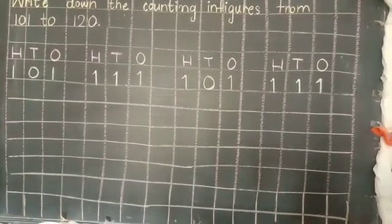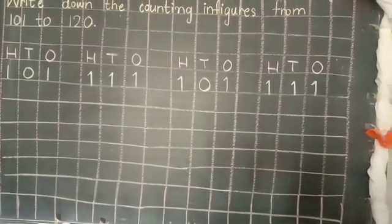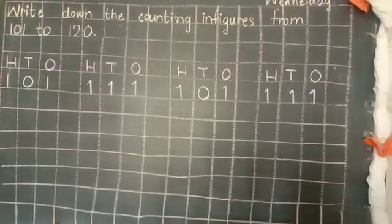Leave one line again, write H, T, O. And write 1, 1, 1.